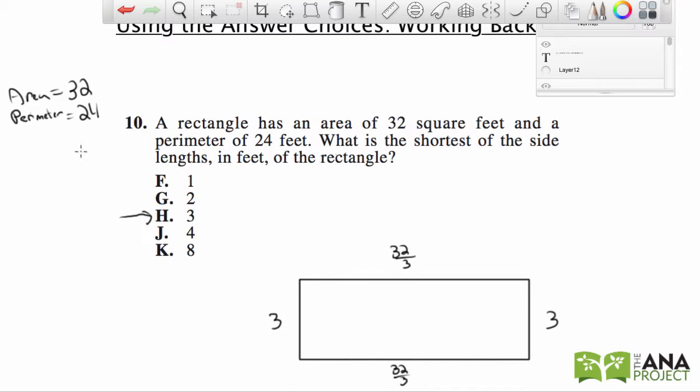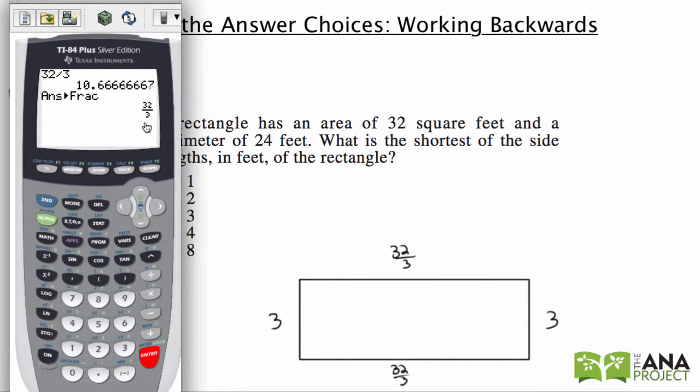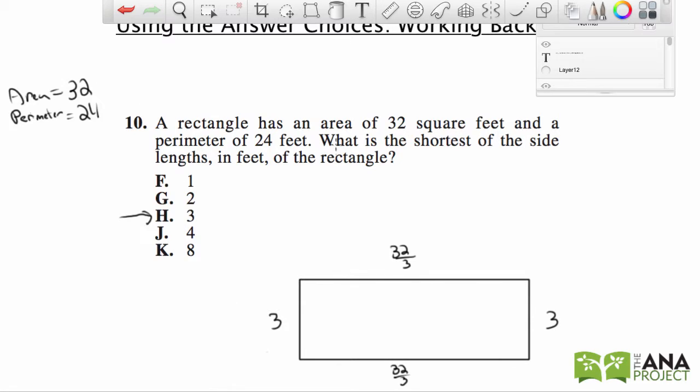Now the perimeter has to be 24. So we have to add up this, this, this, and this, and it has to be 24. So we have 32 thirds. We have two of them. So I'm just going to multiply this times 2 and then we add 3 and then add 3. That's 82 thirds, so 82 divided by 3. That gives us 27.333, so it's too big. We need 24 feet.